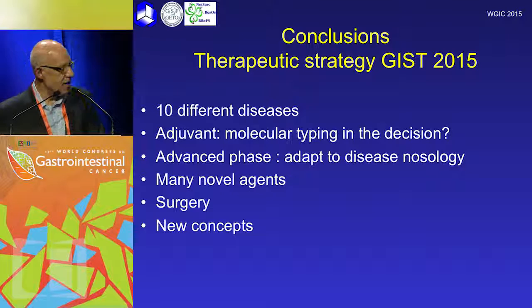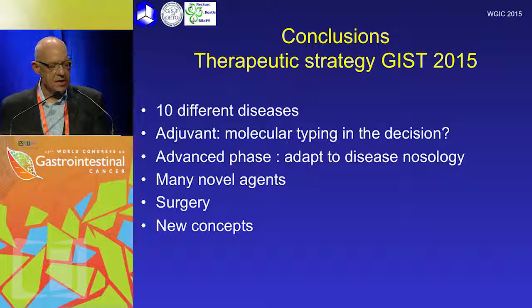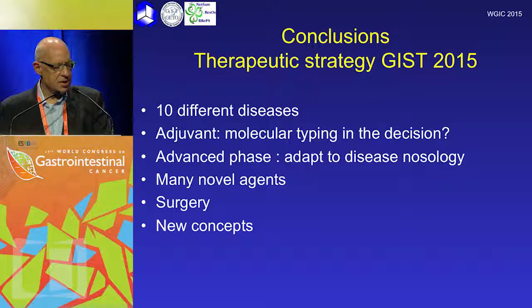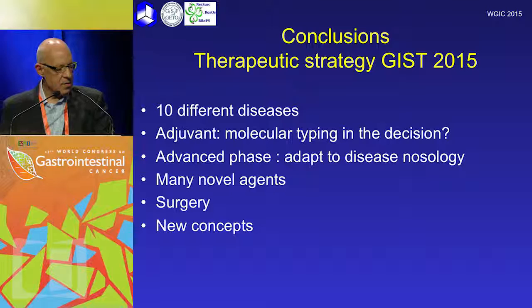In conclusion, GIST is a complex disease with really multiple subtypes. We think that increasingly molecular subtyping will be important in decision-making around adjuvant therapy. We do have to modify our treatment in advanced disease according to disease subtype. There are many novel agents being explored, including the role of surgery in advanced disease. We continue to explore this disease, and I thank you very much for your attention.